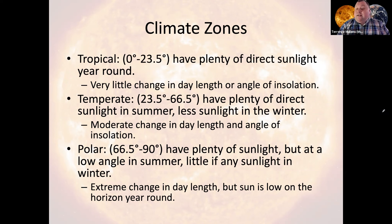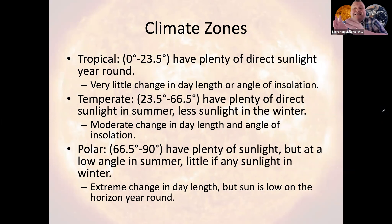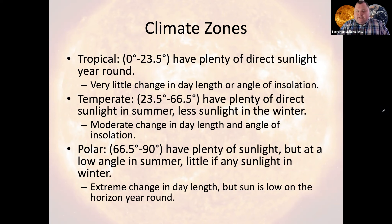Polar regions, on the other hand, receive as much as a 24-hour day of sunlight during the summertime, and as little as a zero-hour day of sunlight in the wintertime. As a result, polar regions see a very extreme temperature variation.